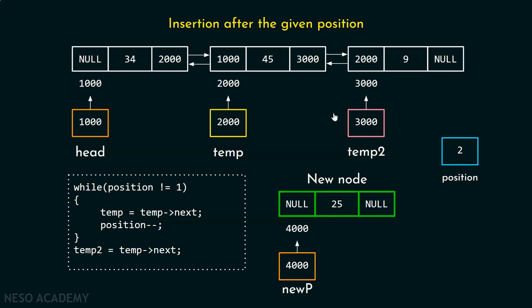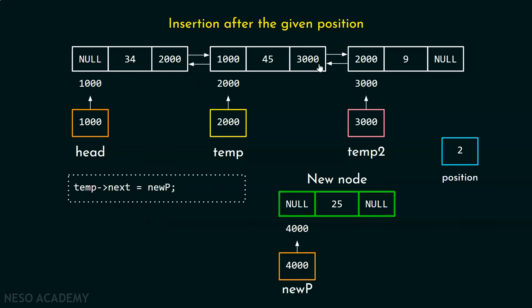We just have to add this node in between these two nodes, and these pointers will help us. First, we will update the next part of this particular node using this line of code: temp next equals new p. Using this line of code, we update the next part of this node so that it will point to the new node. The new node address is 4000, so we replace the stored address with 4000. Now you can see that this node is pointing to the new node.